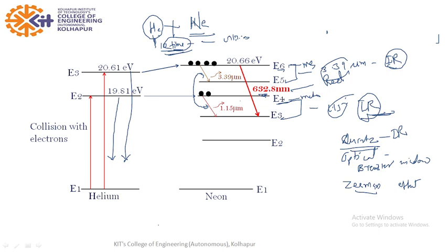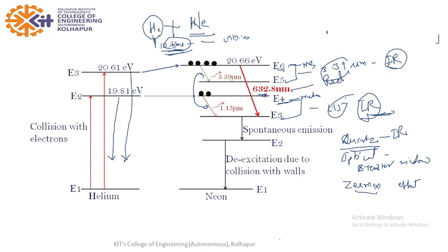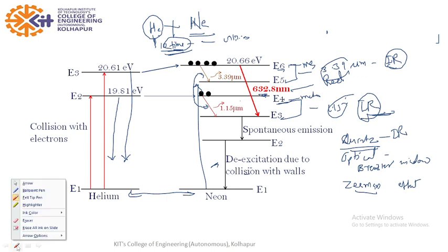This 632.8 nm output is very strong. After the transition, atoms come to E3, then by spontaneous emission to E2, then to E1, losing energy by colliding with the wall of the discharge tube. The collision process is continuous — Helium and Neon keep colliding and Neon atoms are re-excited, making this a continuous process.